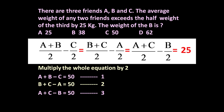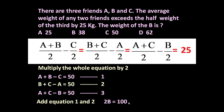We need to determine the weight of B. If we add equation 1 and equation 2, C will cancel and A will cancel, giving us 2B = 100. It means B = 50 kg.